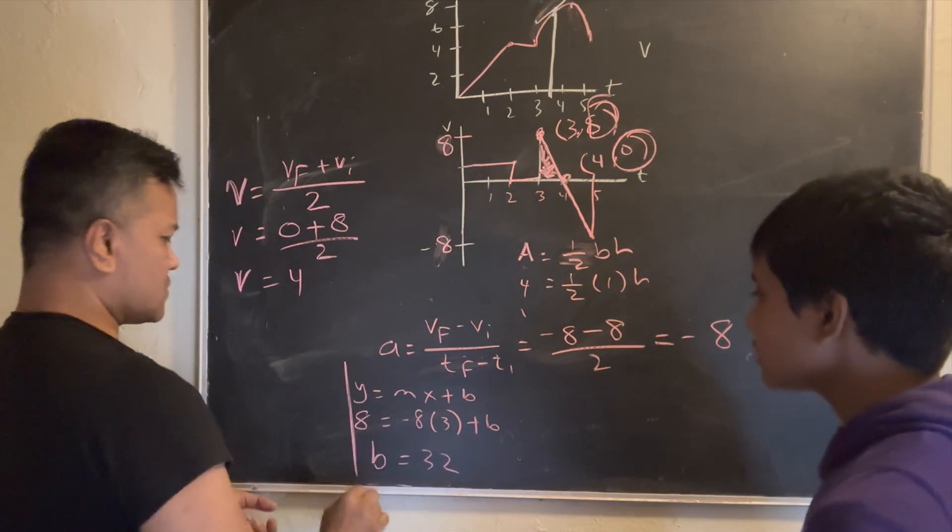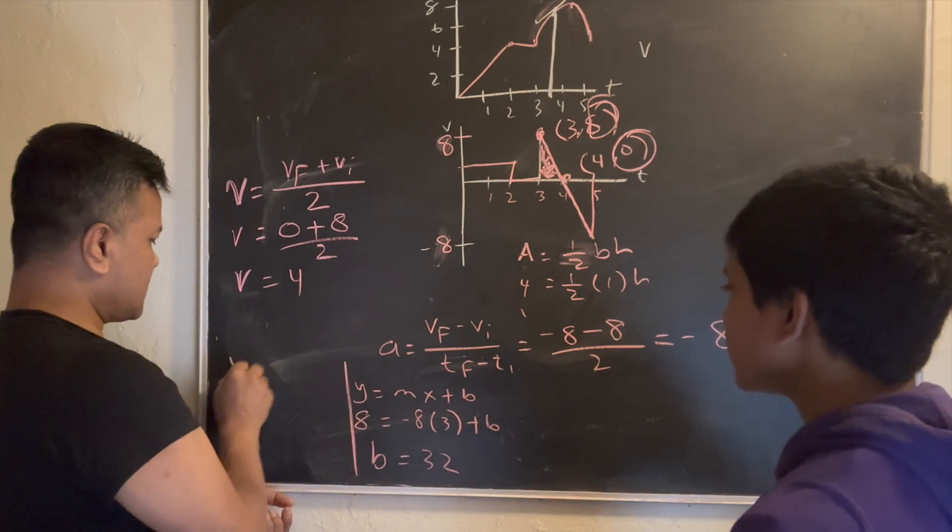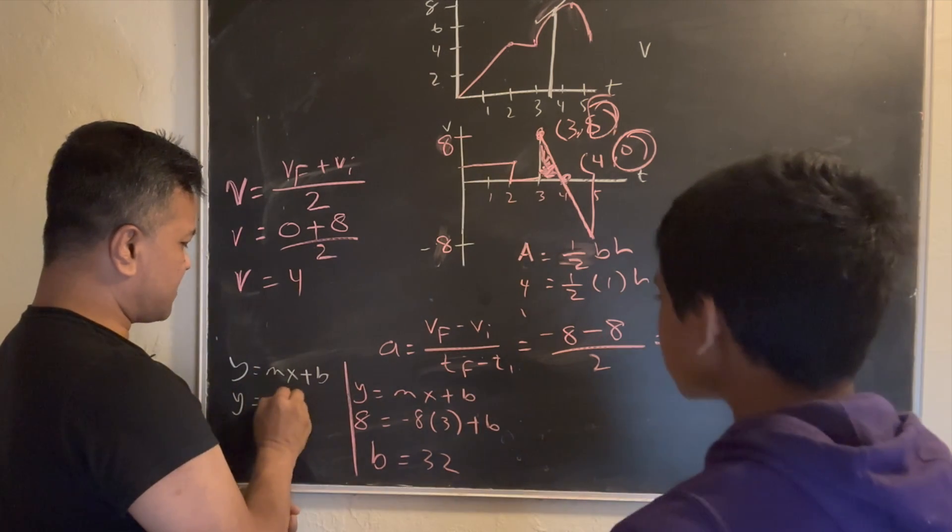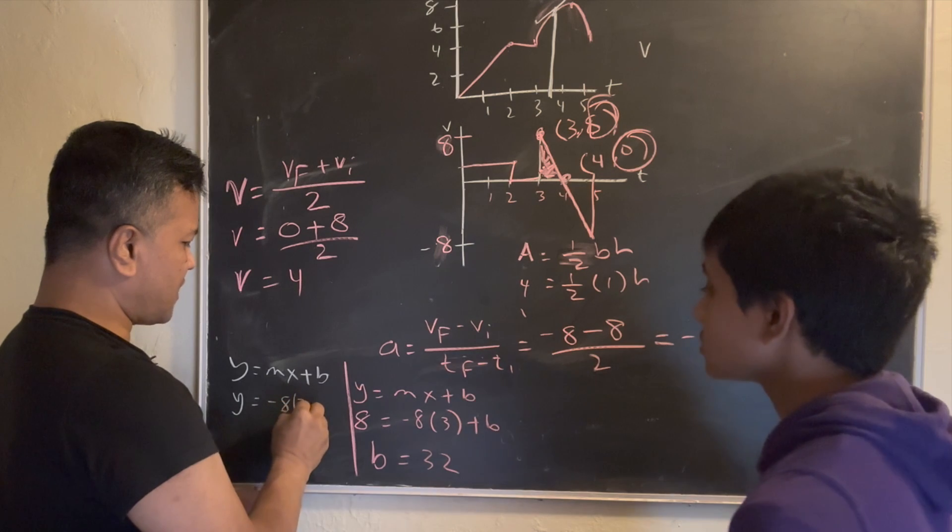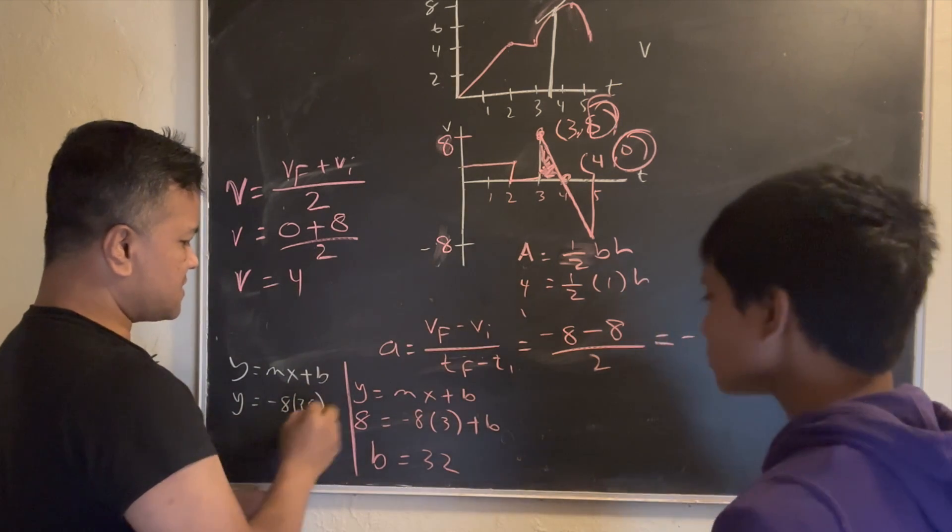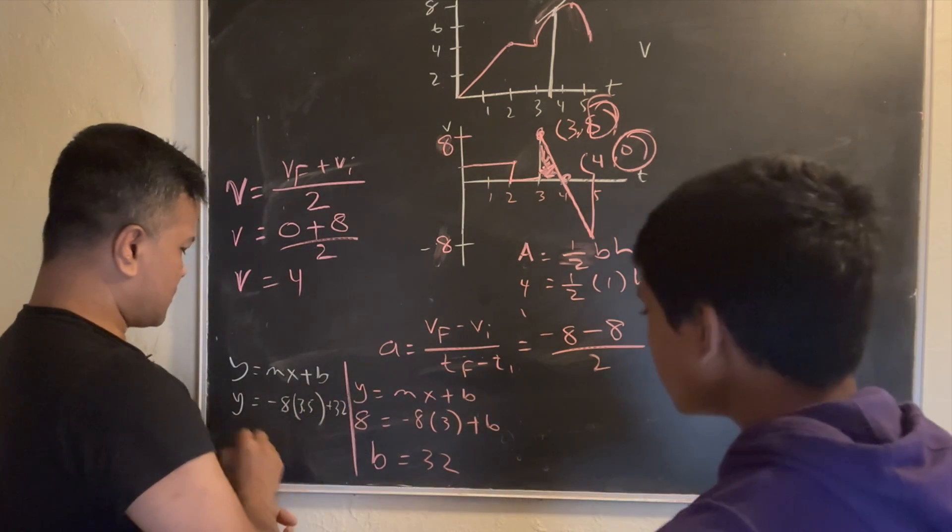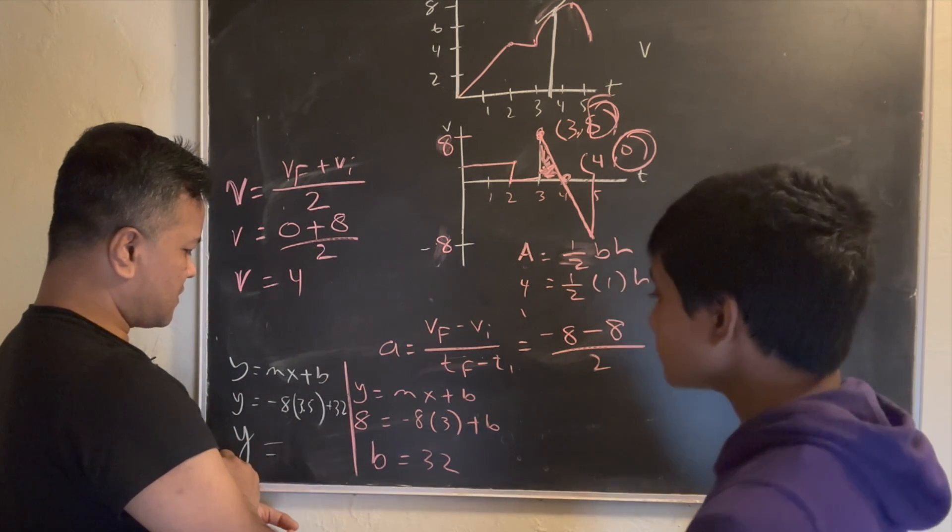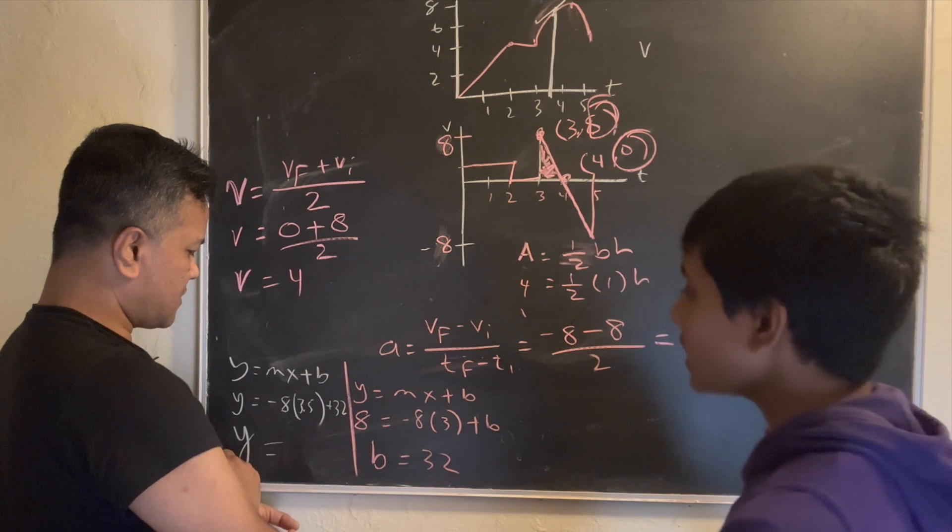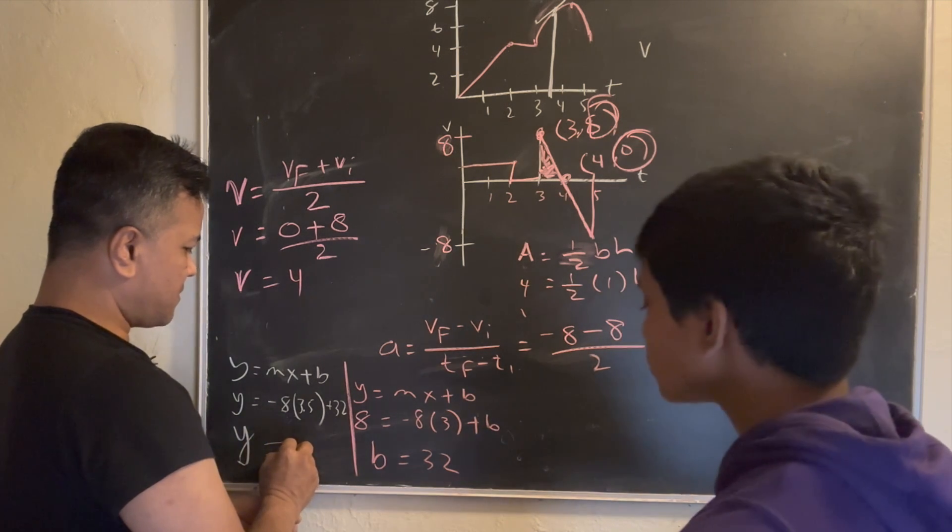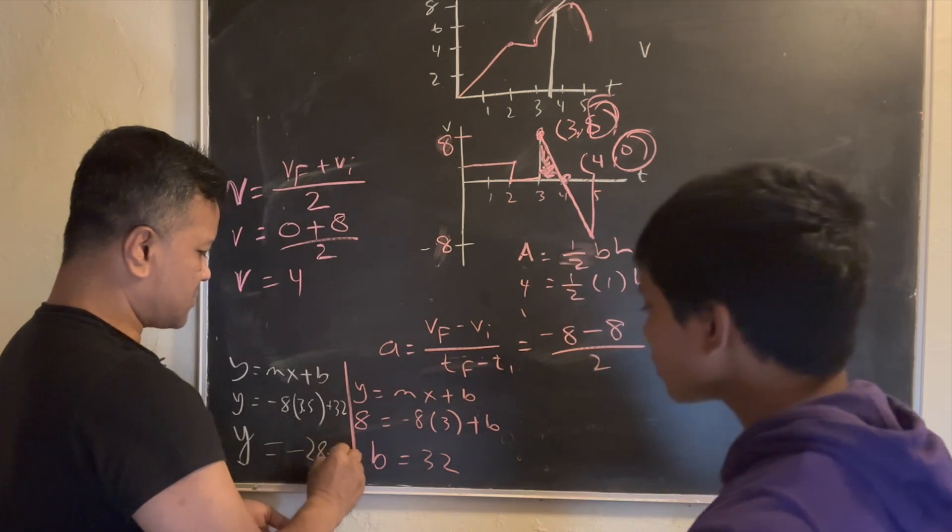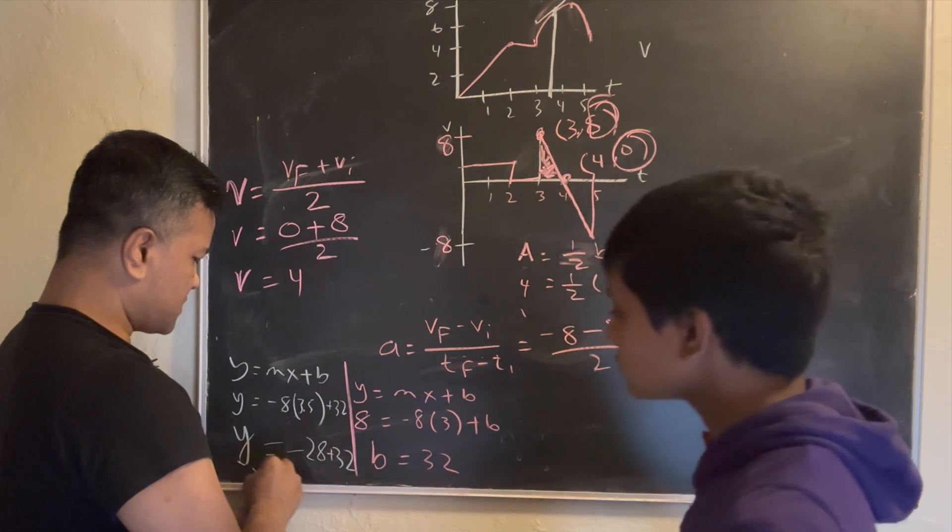So our equation is negative 8x plus 32. So Y is negative 8x. X is 3.5. And B is 32. So Y is negative 8 times 7 over 2 is negative 28 plus 32, which is equal to 4.